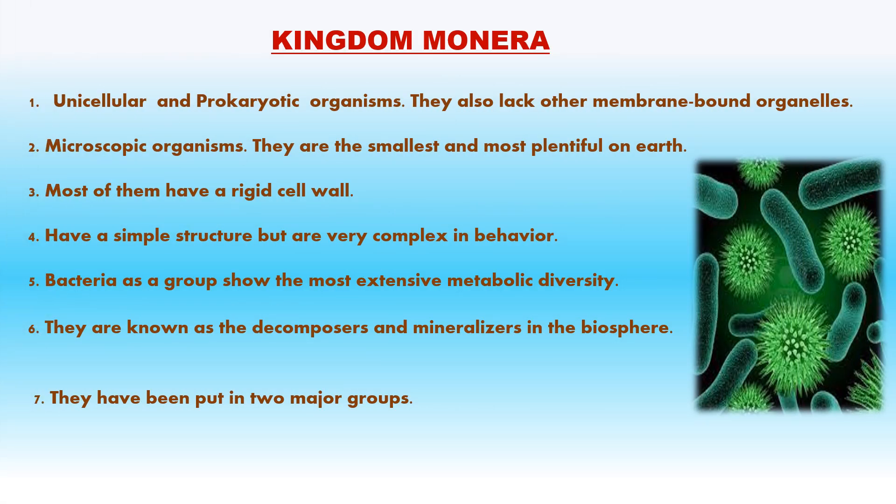Kingdom Monera — important features: 1. Unicellular and prokaryotic organisms (absence of a true well-defined nucleus), also lacking other membrane-bound organelles. 2. Microscopic organisms — the smallest and most plentiful on earth. 3. Most have a rigid cell wall. 4. Have a simple structure but are very complex in behavior. 5. Bacteria show the most extensive metabolic diversity. Some are autotrophic (photoautotrophs or chemoautotrophs). A large majority are heterotrophs, depending on other organisms or dead organic matter for food.